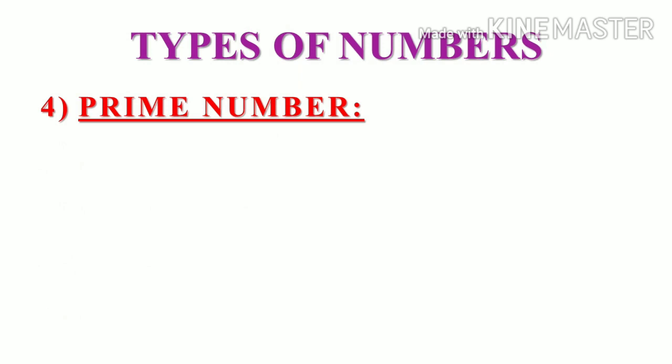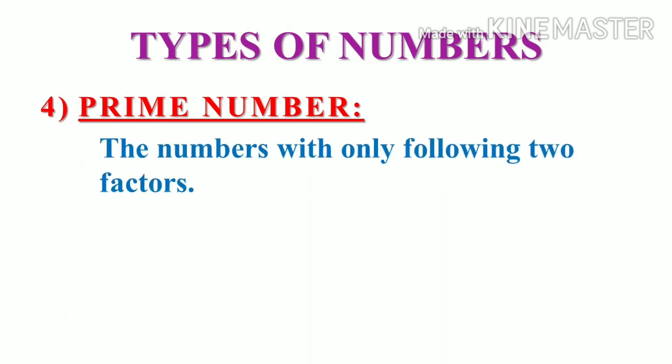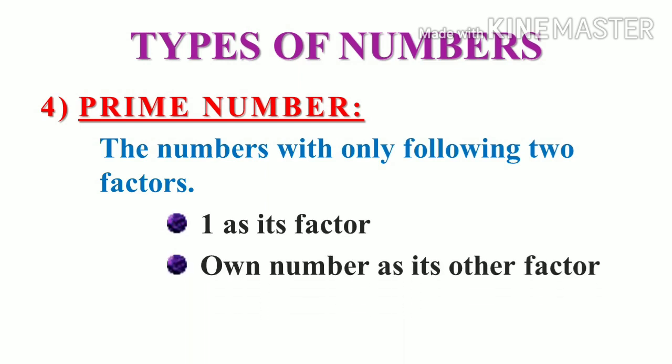Next, prime numbers. Prime numbers are the numbers which has only two factors. First of all, what is a factor? If we take a number x and say for example x is divisible by 7, then 7 is a factor of x. In other words, number is a multiple of factor. Here, we have only two factors, that is one as its factor and one number as its other factor. Let me explain with some example: 2, 11. If we take 2, 2 is divisible by 2 and 1, that's all. 11 is divisible by 1 and 11, that's all. Then these numbers are called as prime numbers.